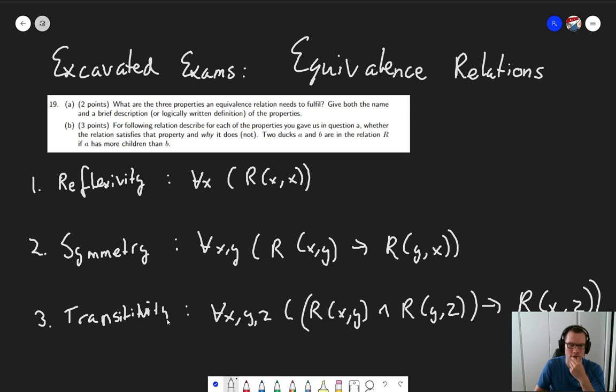Transitivity. Spelling is hard, much harder than math, which is why I teach logic and not English. So these are the three properties of an equivalence relation. And we've written here the logically written definition, so question A answered.